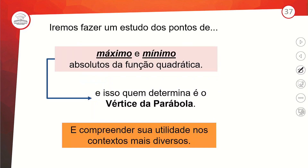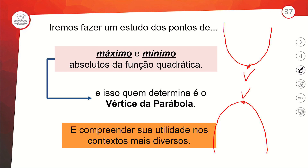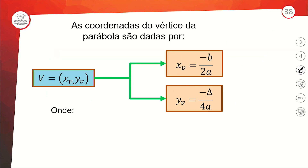O vértice é o ponto mínimo ou máximo da função — onde ela troca o movimento, de subida para descida ou vice-versa. A função vem decrescendo, chega no vértice e começa o movimento contrário. O vértice tem coordenadas: x vértice = menos b sobre 2a, e y vértice = menos delta sobre 4a.